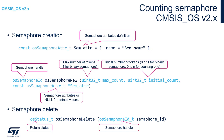Let's have a look at the CMSIS-OS v2 API dedicated to counting semaphores. To create a binary or counting semaphore, we need to fill partially its attribute structure. In fact, it is necessary to specify only the semaphore name. The rest of the fields — the semaphore control block, its size, and its start address — are filled automatically during semaphore creation.